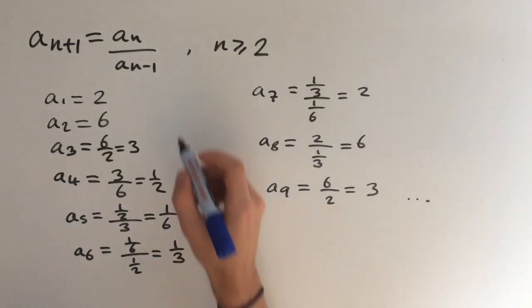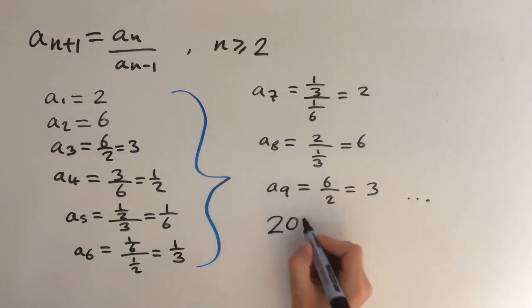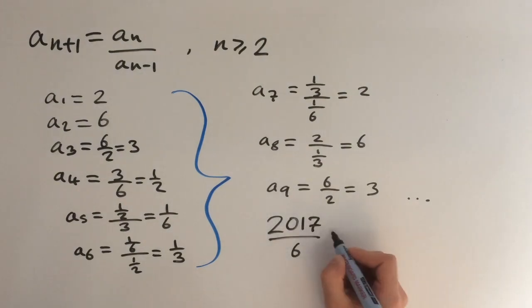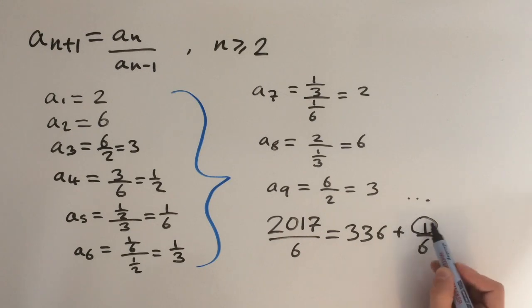Hopefully you can see a pattern that the sequence is repeating itself every six terms. So all we need to do now is figure out where 2017 appears in that cycle. If you divide 2017 by 6, you'll get 336 plus 1 over 6, and this tells us that we have a remainder of 1.